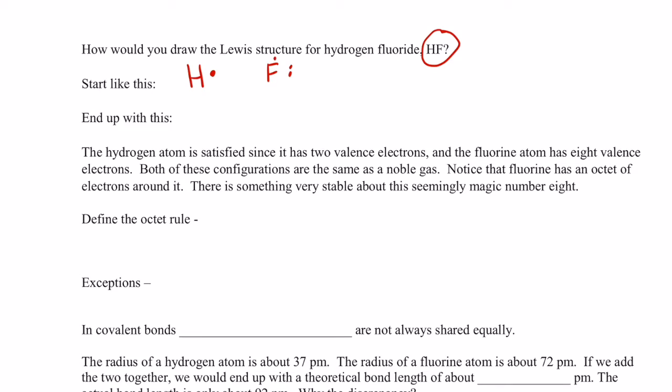I'm going to put those three pairs like this and one by itself. We can readily see that as these get close enough to each other, that pair can be shared between the two. So we draw the shared pair, and this fluorine still has those non-bonding pairs surrounding it. Notice that the hydrogen atom is satisfied since it has two valence electrons. The fluorine atom has eight valence electrons. Both of these configurations are the same as a noble gas. Notice that fluorine has an octet of electrons around it.